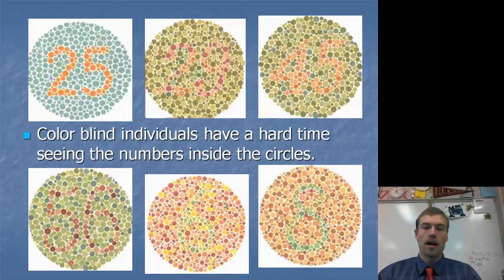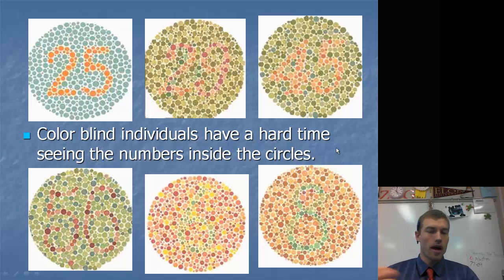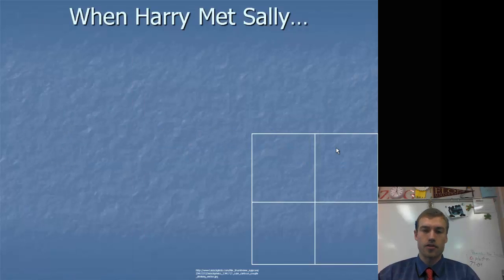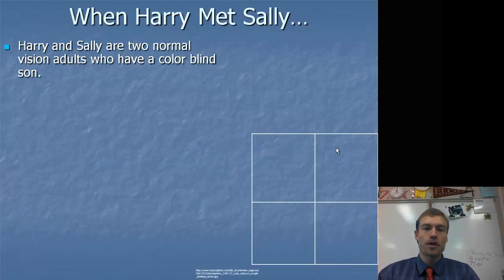Are any of you colorblind? If you look at this chart, there should be some numbers in each of these circles. I see 25 here, 29, 45, 56, 6, and then 8. If you're having a hard time seeing those numbers, then it's very possible that you are colorblind. That is an X-linked recessive trait. The allele for that, or the gene for that, is on the X chromosome.